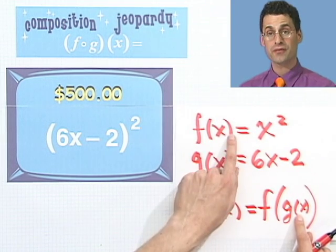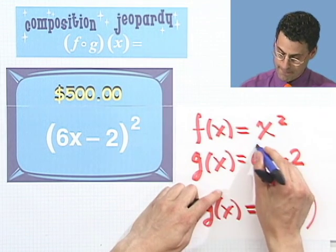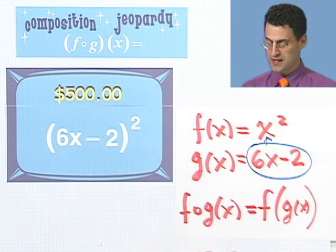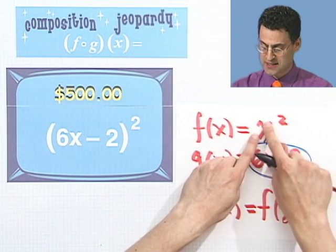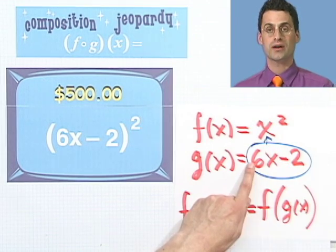I plug that in to f. So when I take this and plug that in to here, what do I see? I see in placing x, I put in g of x, so that's 6x minus 2. So I see 6x minus 2 all squared.